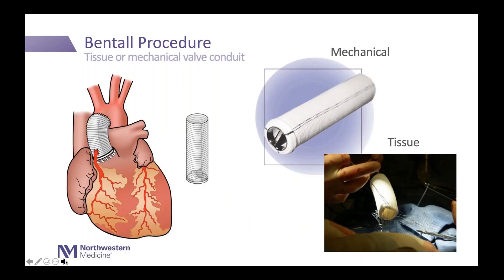The Bentall procedure is a total root replacement where both the aortic valve is removed and the aneurysm is removed, replaced with a conduit. The conduit is constructed of either a tissue or mechanical valve attached to a Dacron graft. The Dacron is a textile, woven in a machine into a perfect tube, and that is the replacement part for the valve and the aorta.